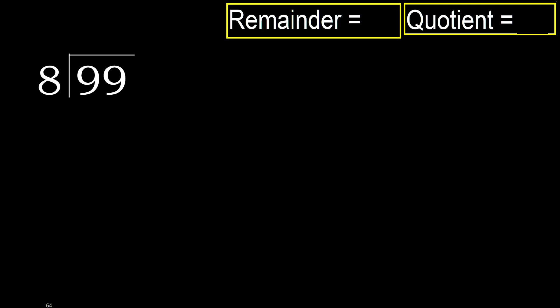99 divided by 8. 9 is not less, therefore work with 9. 8 multiplied by which number is nearest to 9 but not greater? 8 multiplied by 2 is 16 — 16 is greater. 8 multiplied by 1 is 8 — not greater. Subtract, remainder is 1. Next.